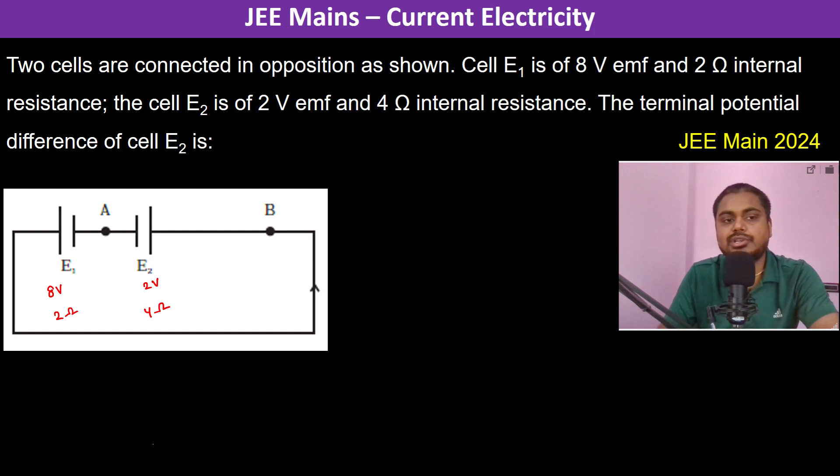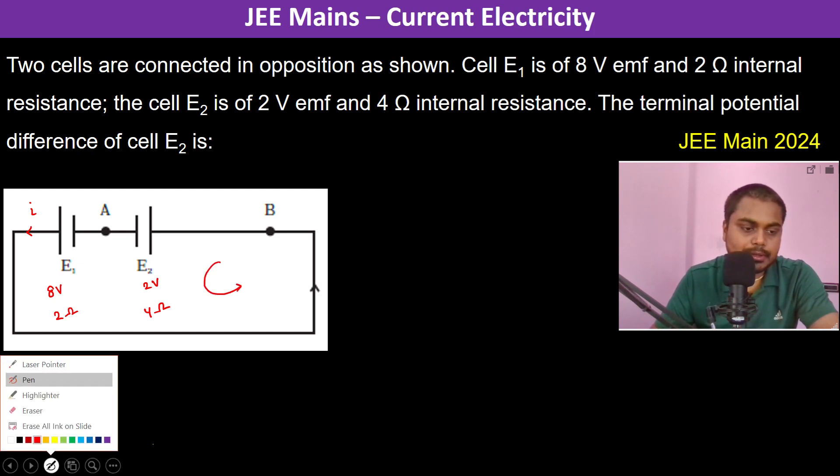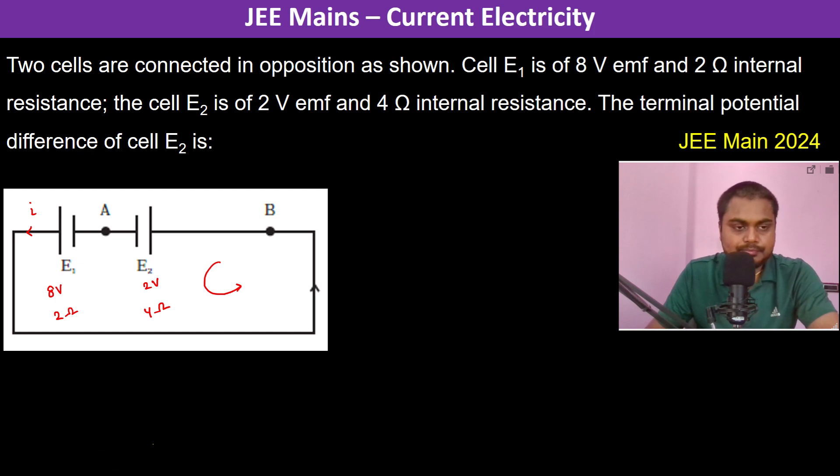The terminal potential difference of cell E2 is to be found. Let us consider this is the current which is flowing in the circuit. When we apply Kirchhoff's loop law, it's going to be 8 minus 2I minus 4I and this is again minus 2 volts is equal to 0.